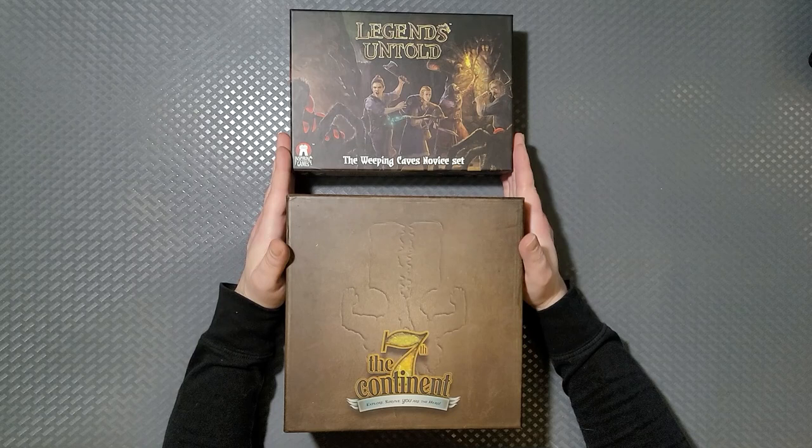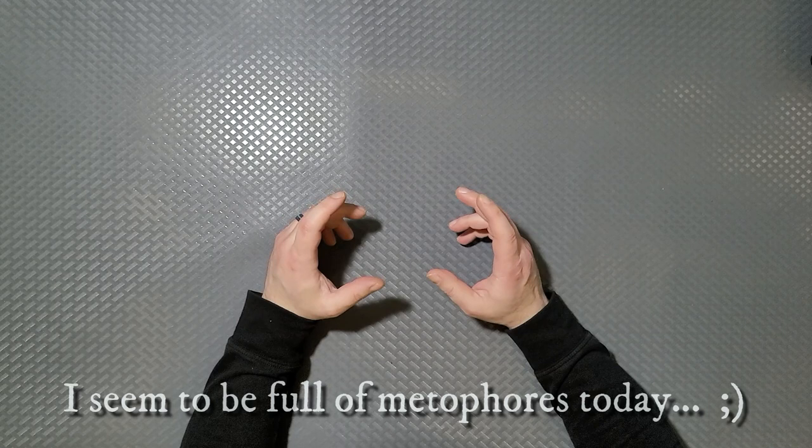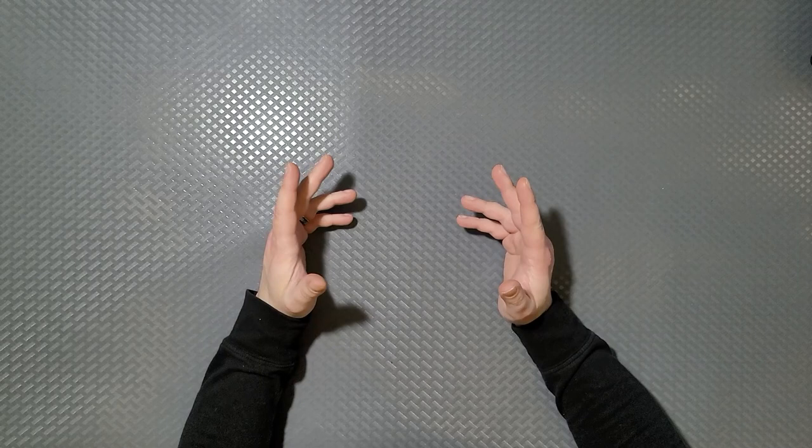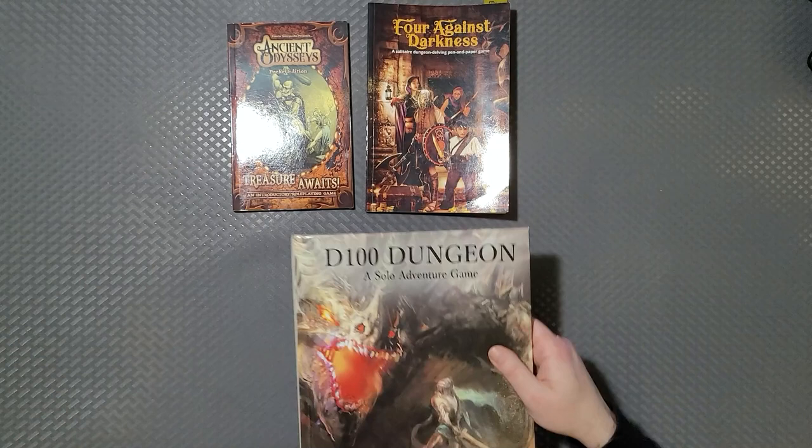So now we can get to the next tier, which would be open guided solo role playing a little bit further down the rabbit hole here. They tend to be a little less linear. They're very often open world. And so some examples of those would be like ancient odysseys, Four Against Darkness, D 100 dungeon. Of these, these two are the most common, the most well-known.